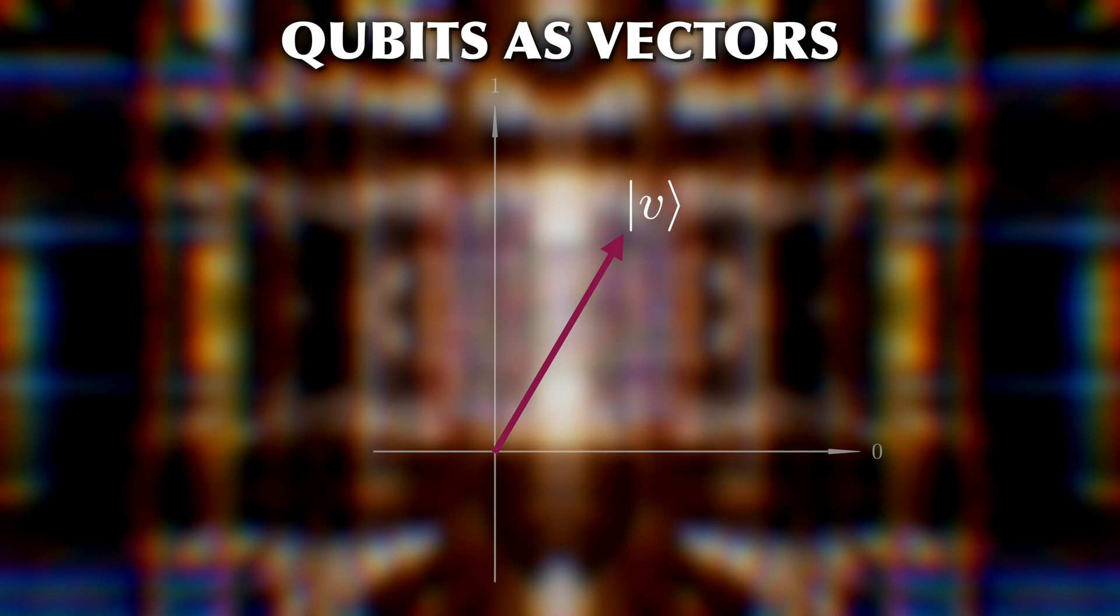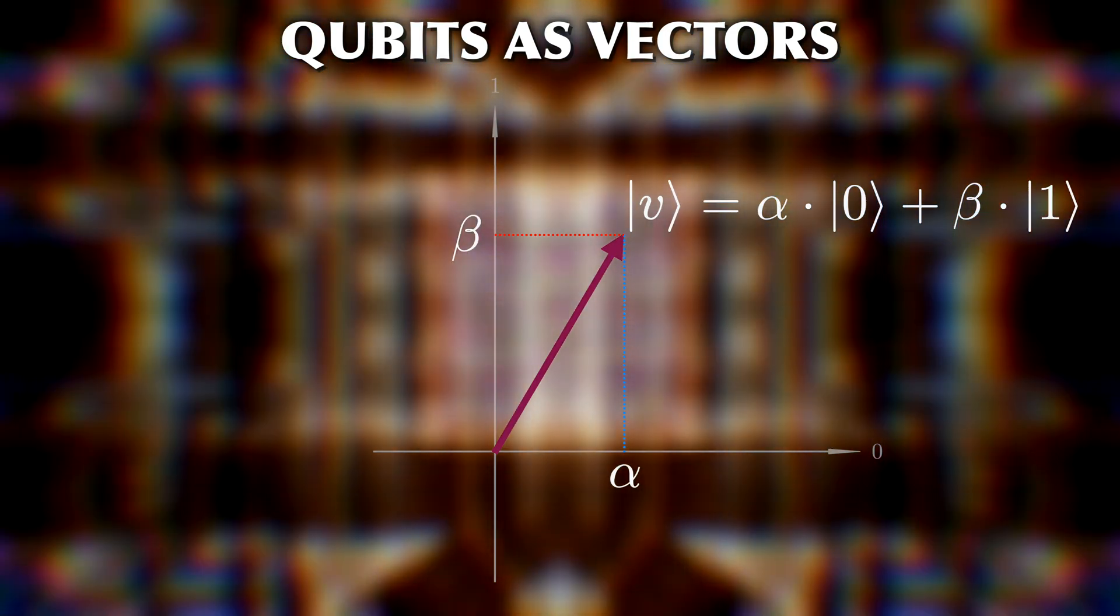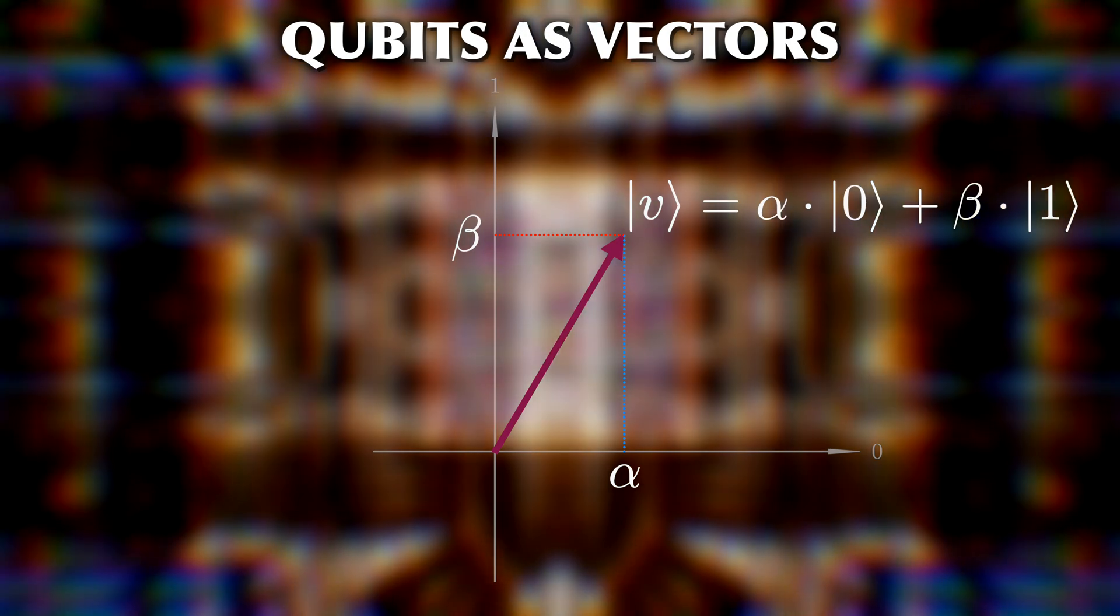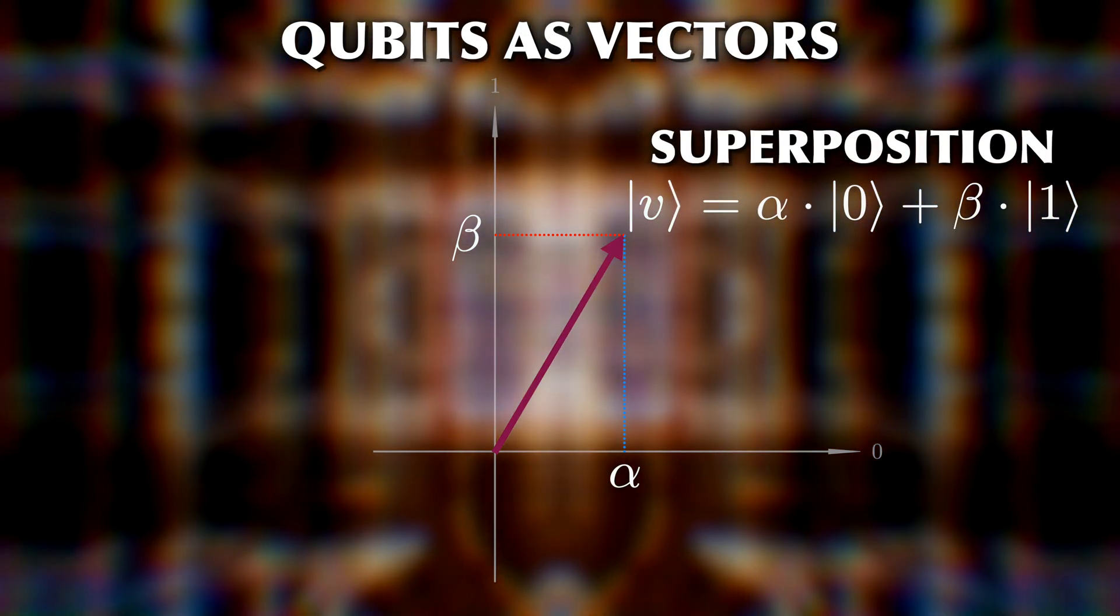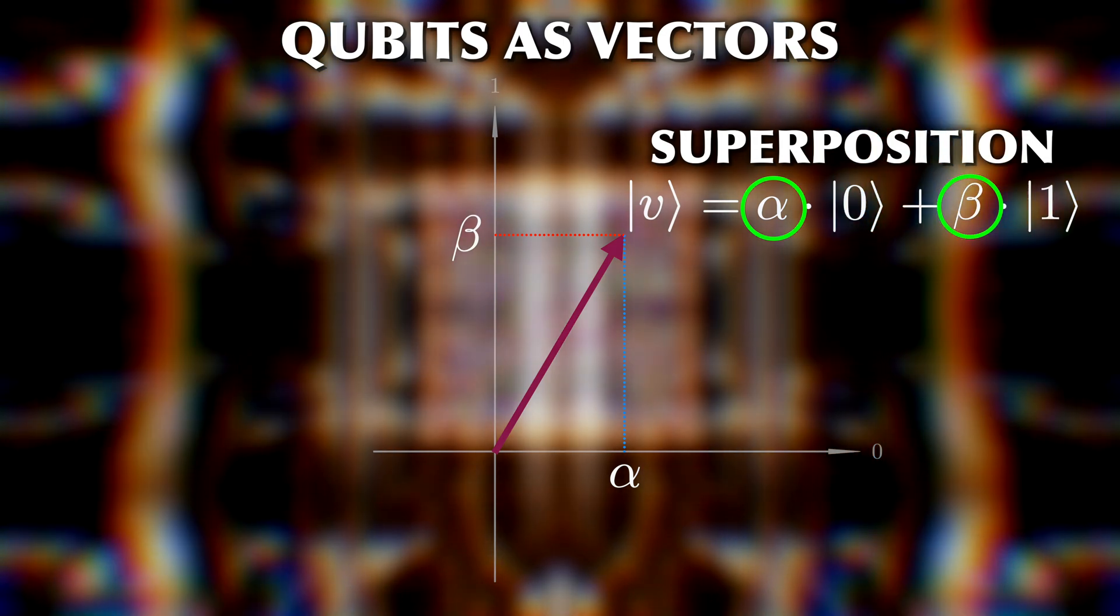According to the rules of quantum mechanics, a general state of a two-level system, like a qubit, can be written like this. More precisely, we say that the qubit is in a superposition of the states 0 and 1, and alpha and beta are the respective amplitudes.